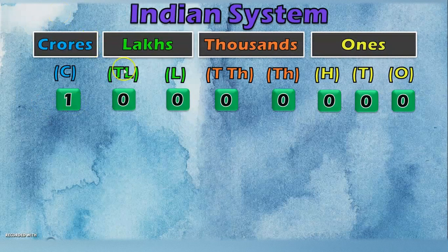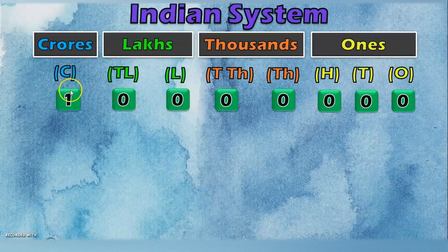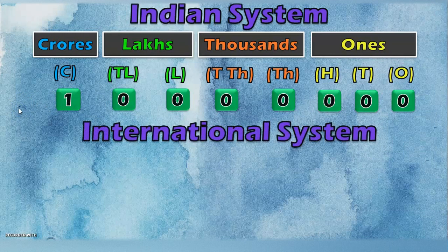We have seen the usage of periods. We add a comma after the 1s, 10s, and 100s place — these 3 together are called the 1s period. After the 1000 and 10,000s place, you place another comma, and these 2 together form the 1000s period. The lakh and 10 lakh places together form the lakhs period, and you place a comma there, giving you the new crore's period. This makes the number 1 crore.